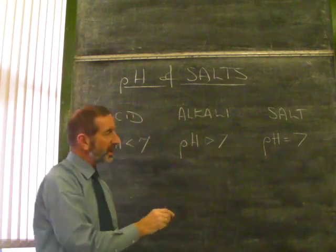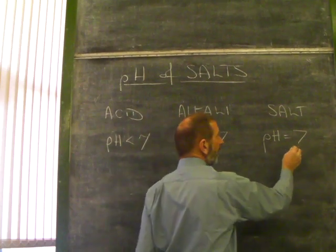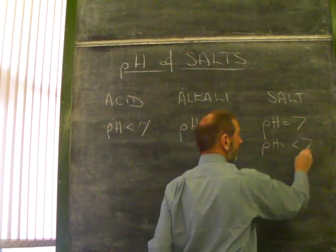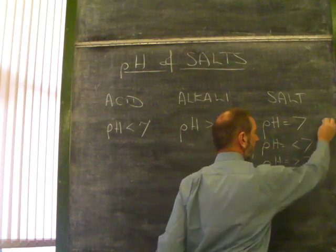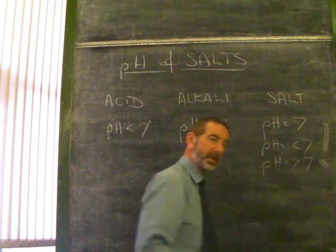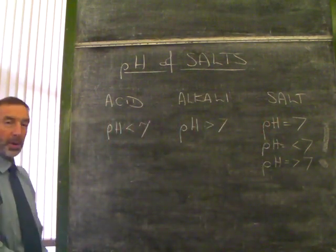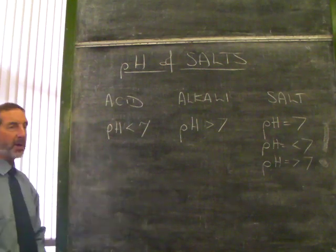Well, not necessarily. That's what makes it a little bit of a mystery. Because some salts are neutral, but some salts can be acidic, and some salts can be alkaline. It's a bit of a surprise. Salts can be acidic, alkaline, or neutral. It just depends. What does it depend on? Well, it depends on the acid and alkali they're made from.